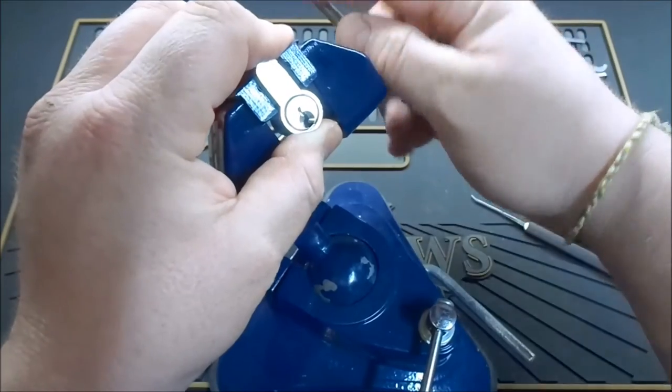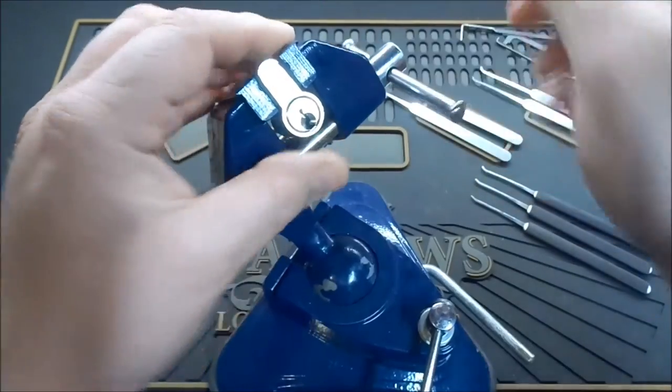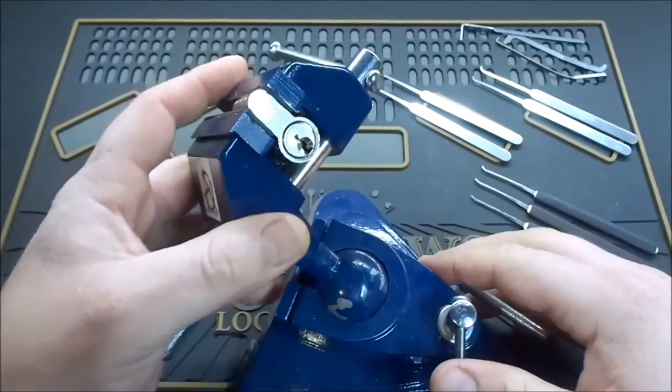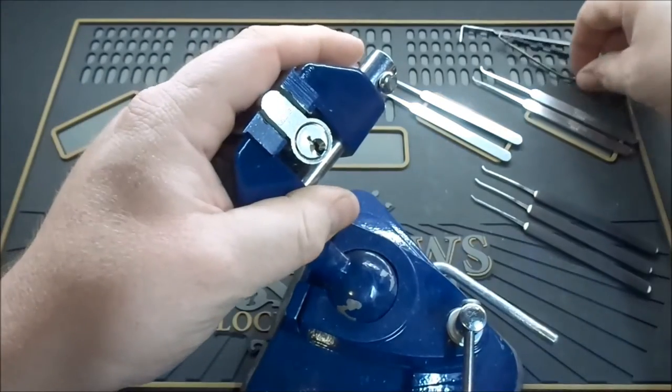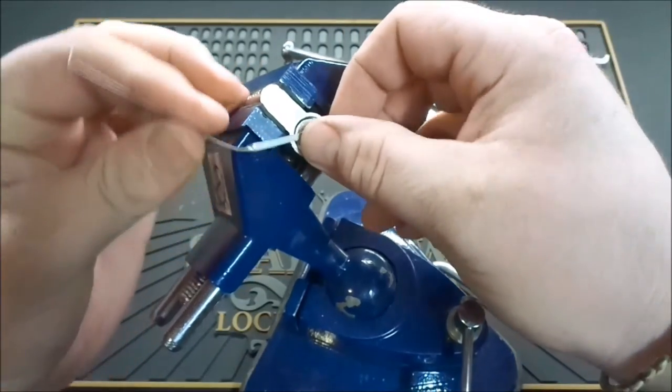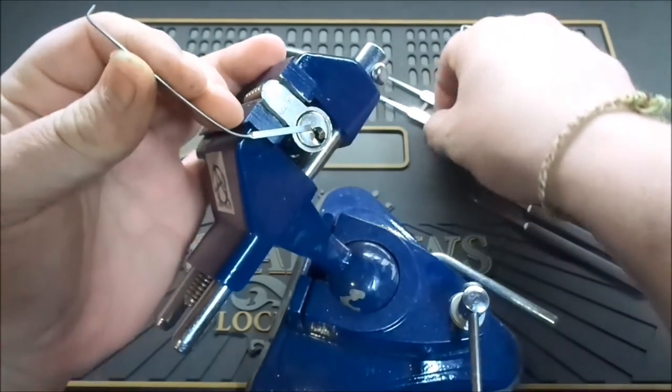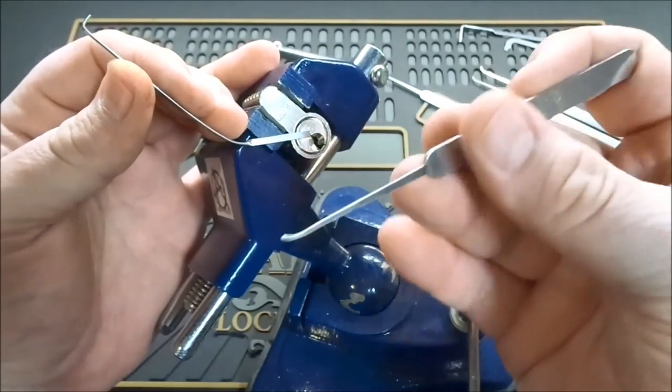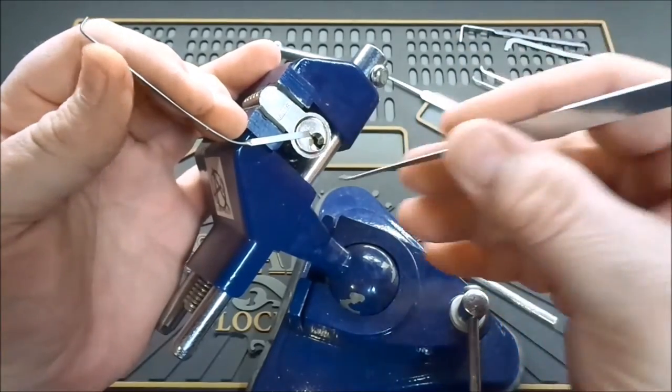So again, this is the second one out of three that he sent me. I'm going to try top of the keyway with this one. We're just going to start with one of the South Horde picks. See if we can go through and find a binder.